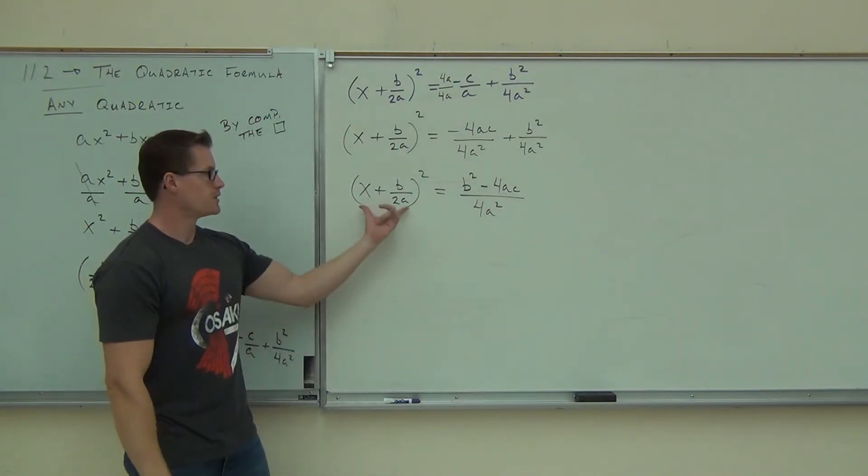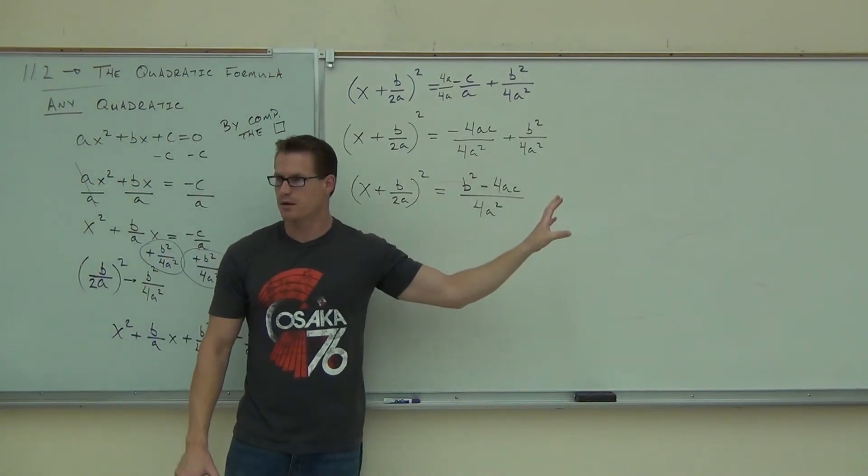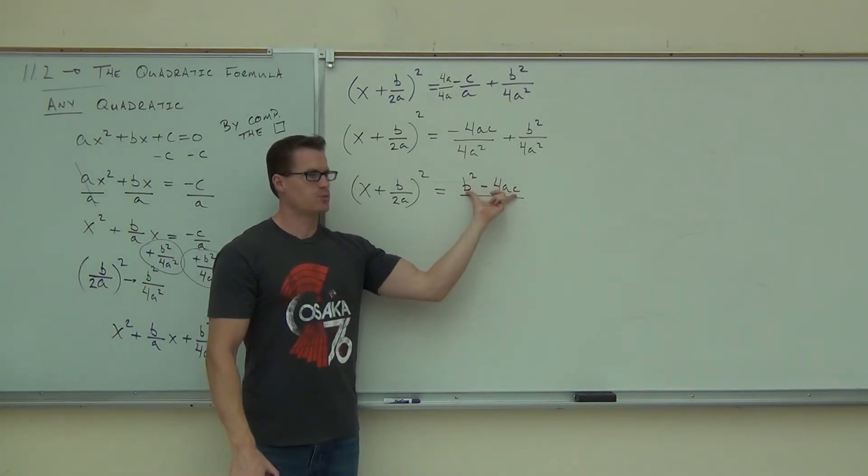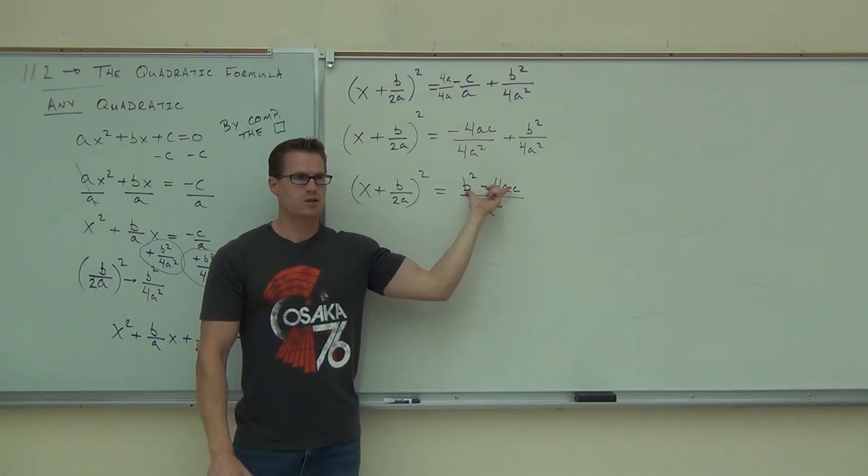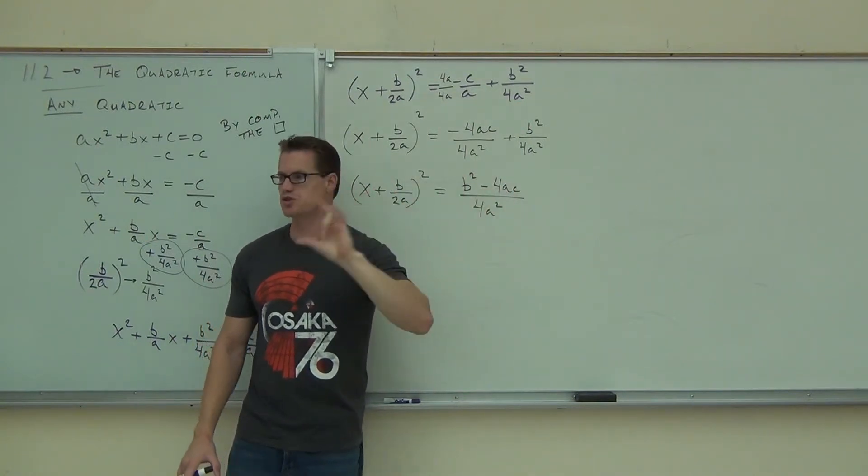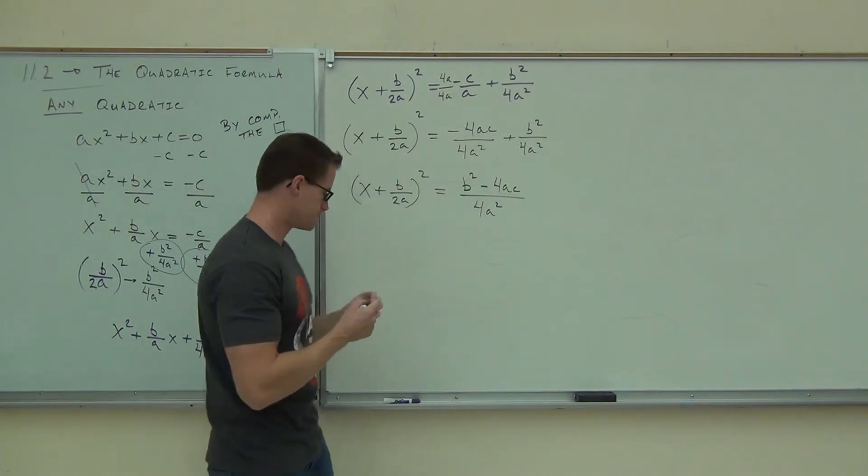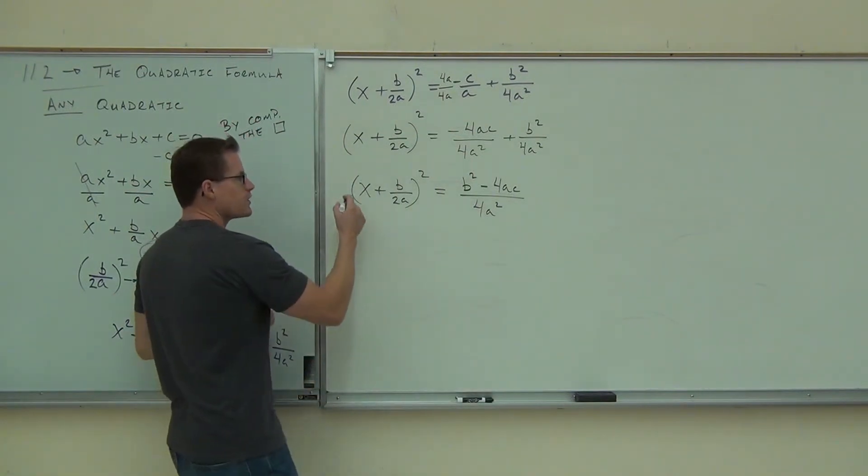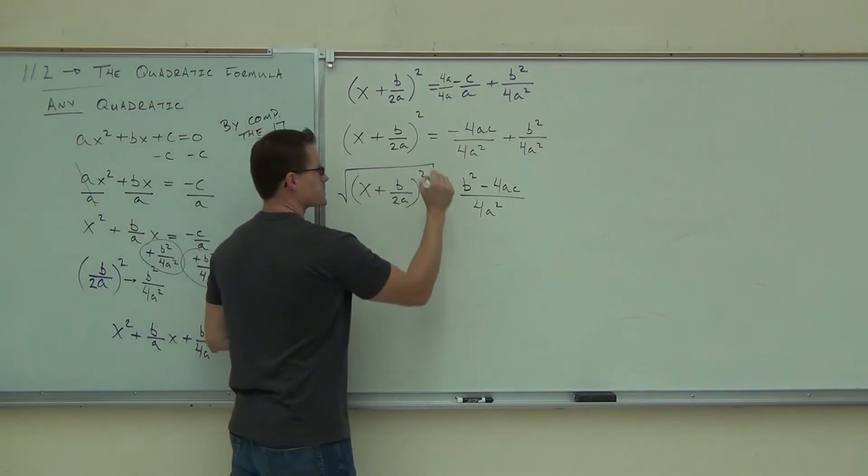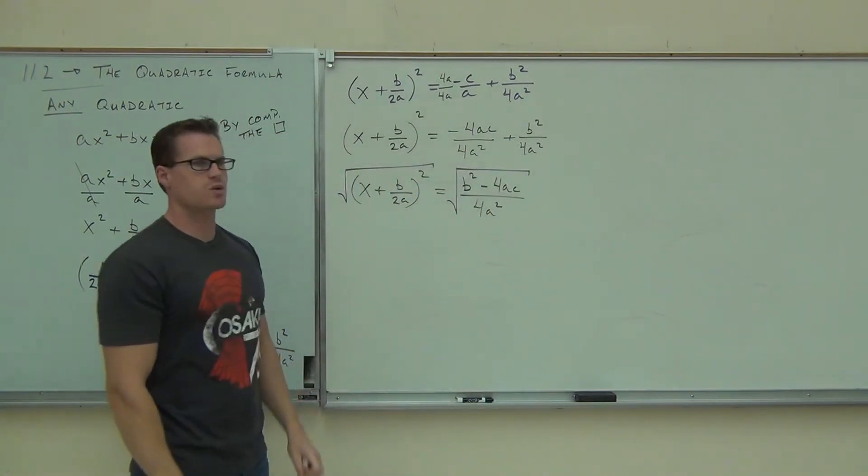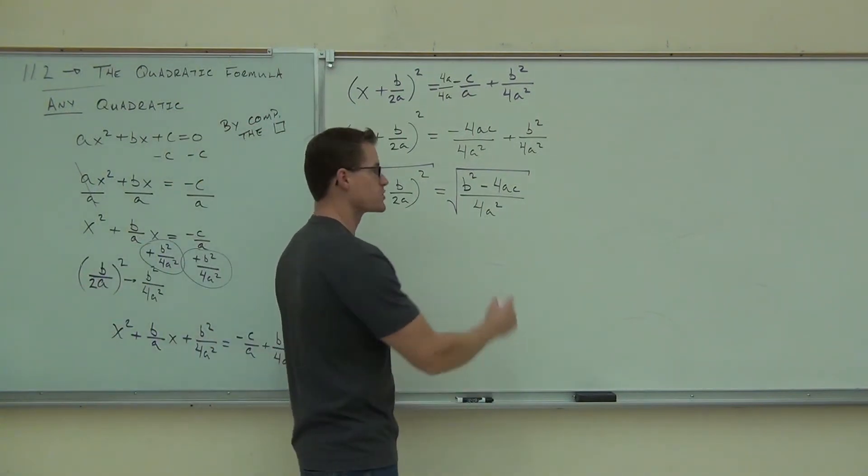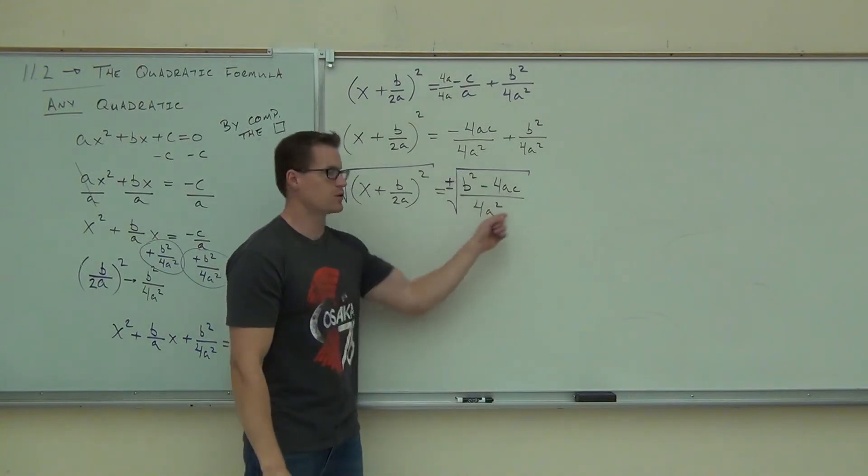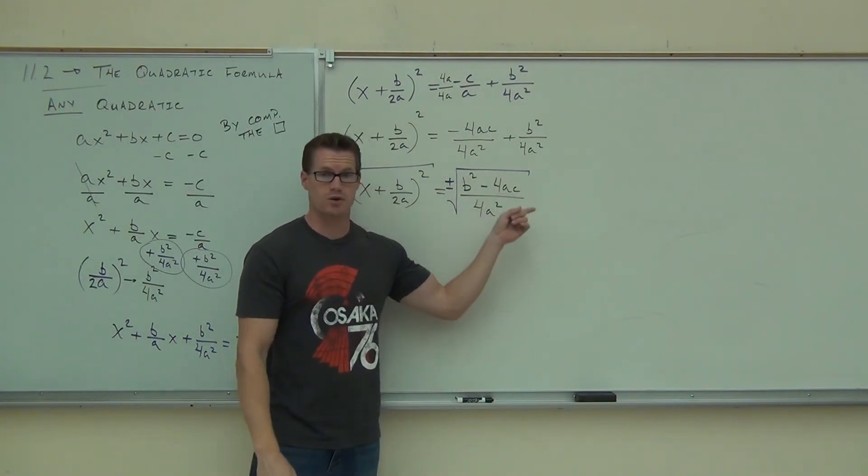Right now, we're good enough to take the square root of both sides. We have this the way we want it. This right here, by the way, that little piece is called the discriminant. Can you say discriminant? Not discriminate. We're not discriminating. This is discriminant. What it's going to tell you is how many solutions you're going to get and what type they are. It's kind of cool. So, we're good enough right now to take the square root of both sides.